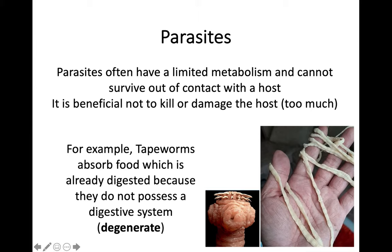Other examples include tapeworms. Through an electron microscope, this is what the top of a tapeworm looks like. They can burrow into your intestines and basically absorb the food you have already digested. Because of that, parasites can sometimes be called degenerates — meaning they do not possess a full digestive system, because they don't need to. Tapeworms don't need a digestive system because they take in the food you have effectively digested for them. Parasites often have a limited metabolism and need to be in contact with a host to survive.